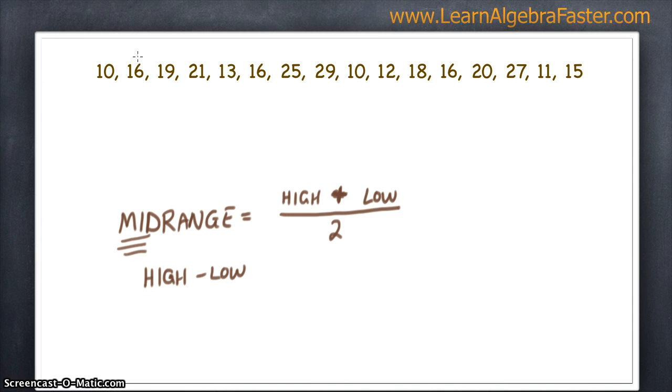So we see we start with 10. 16 is bigger than 10. 19 is bigger than 16. 21 is bigger than 19. So 21 is our new highest value. So not 13, not 16. 25 is even higher. And 29 is even higher than that. And as we continue to read left to right, we find out that 29 is our highest number.